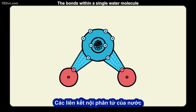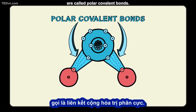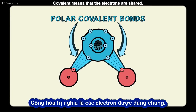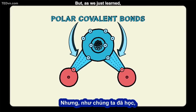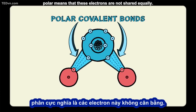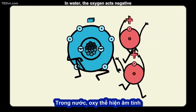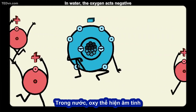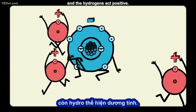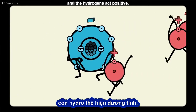The bonds within a single water molecule are called polar covalent bonds. Covalent means that the electrons are shared, but polar means that these electrons are not shared equally. In water, the oxygen acts negative and the hydrogens act positive.